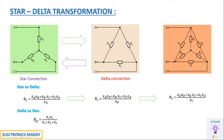For delta-to-star conversion, R1 becomes Ra, R2 becomes Rb, and R3 becomes Rc. For Ra, the numerator is the product of the two adjacent branches — R2 and R3 — so Ra = (R2·R3) / (R1 + R2 + R3). The denominator, which is the sum of all three delta resistances, remains common for all three star resistances.